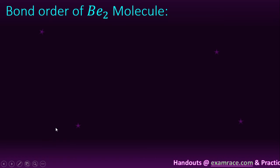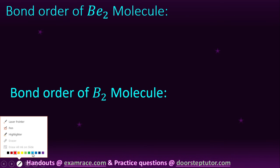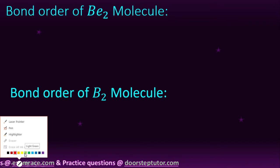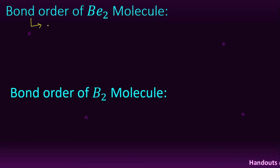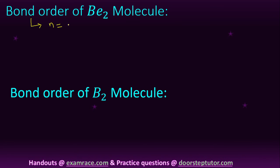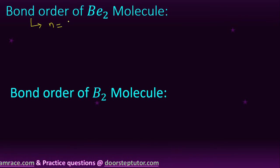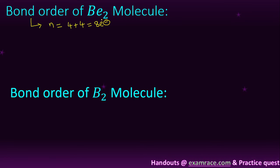We will calculate the bond order of the Be₂ molecule. First, we calculate the total number of electrons. Beryllium has atomic number 4, so 4 electrons per atom. Therefore, the total number of electrons in Be₂ is 4 plus 4, which equals 8 electrons. Substituting into the formula: bond order = 3 minus modulus of (0.5 into 8 minus 7) modulus.